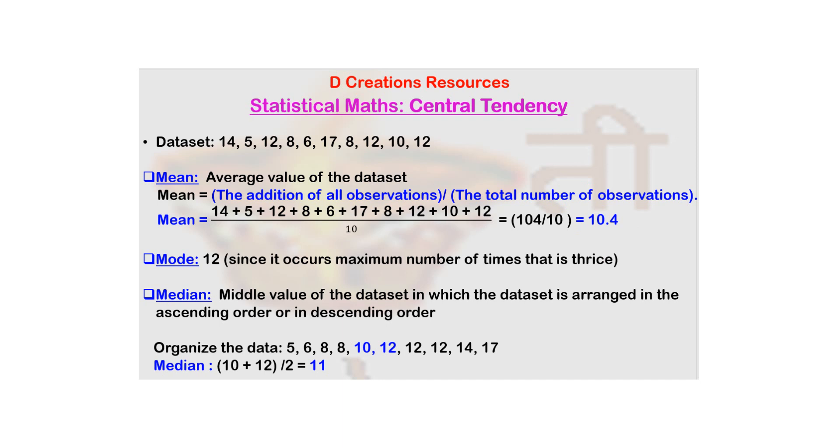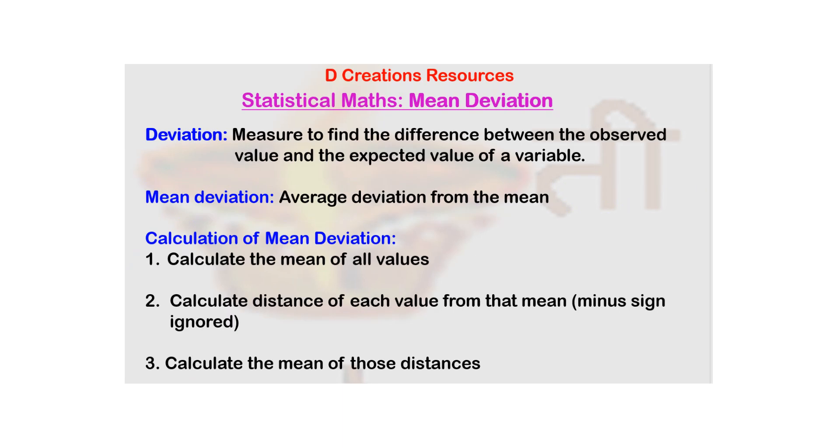When you are finding out mean deviation, you also need to know what is deviation. Deviation is a word we use even colloquially. It means how far is it from a certain value. It's a measure to find the difference between observed value and expected value.